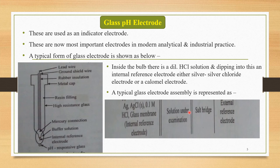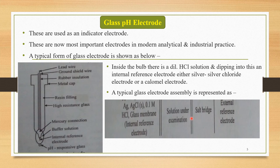A typical glass electrode assembly is represented as: Ag, AgCl (solid) | 0.1 M HCl | glass membrane | solution under examination. The solution to be examined is placed here. A salt bridge is used to connect the two half-cells to form a complete cell. The external reference electrode is connected to the glass electrode assembly via the salt bridge.